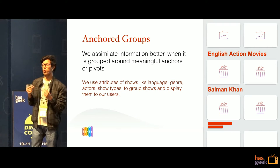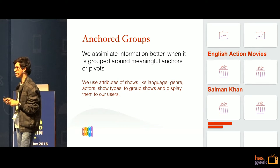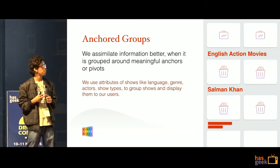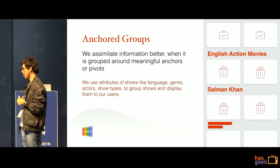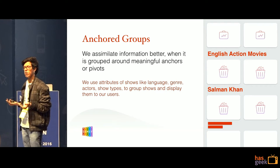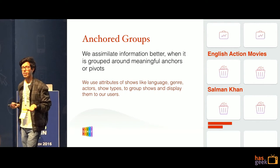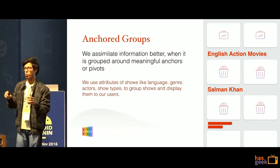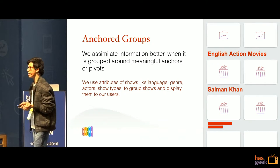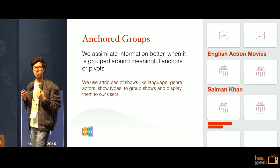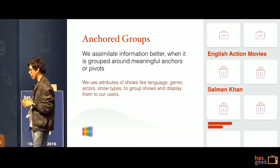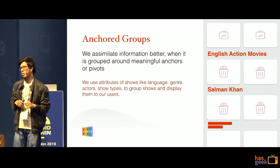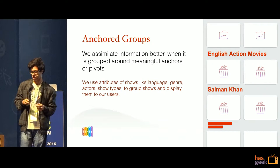Next, we grouped all of these recommendations based on specific anchors or pivots. This helped our users browse the list much faster. If you simply have a group of TV shows you have to evaluate one by one, it's slow. But when we grouped shows based on pivots — like 'English action movies' — browsing became a lot easier. You look at that list and say, I'm in the mood for an English action movie right now, let me check every one that's on TV.